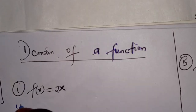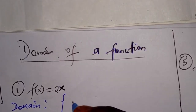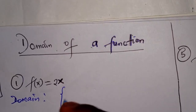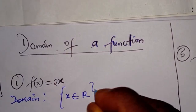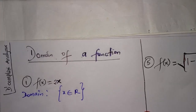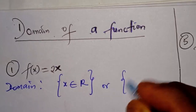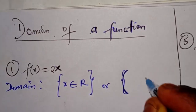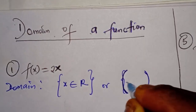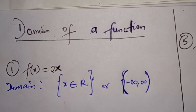So the domain is the set of all numbers x which is a member of the set of real numbers. Full stop. This is the domain. Or, if I write it in interval notation, since real numbers include negative and positive numbers, it is from negative infinity to positive infinity. Either form is the domain.